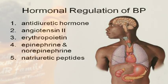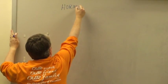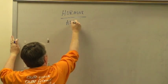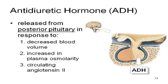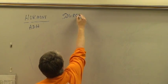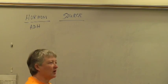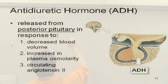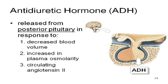The first hormone is anti-diuretic hormone. Anti-diuretics — what do diuretics make you do? So anti-diuretic makes you not pee. ADH comes from the posterior pituitary. The stimuli that cause the posterior pituitary to release ADH are: a decrease in blood volume, and an increase in plasma osmolarity — which is how much stuff is dissolved in your plasma.